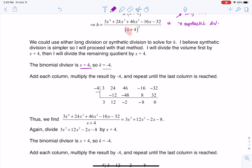Since I have a divisor of x + 4, my k value is -4, and the coefficients were 3, 24, 46, -16, and -32. So I run through synthetic division—drop it down, multiply, all of that fun stuff. There's my remainder and it should be 0.